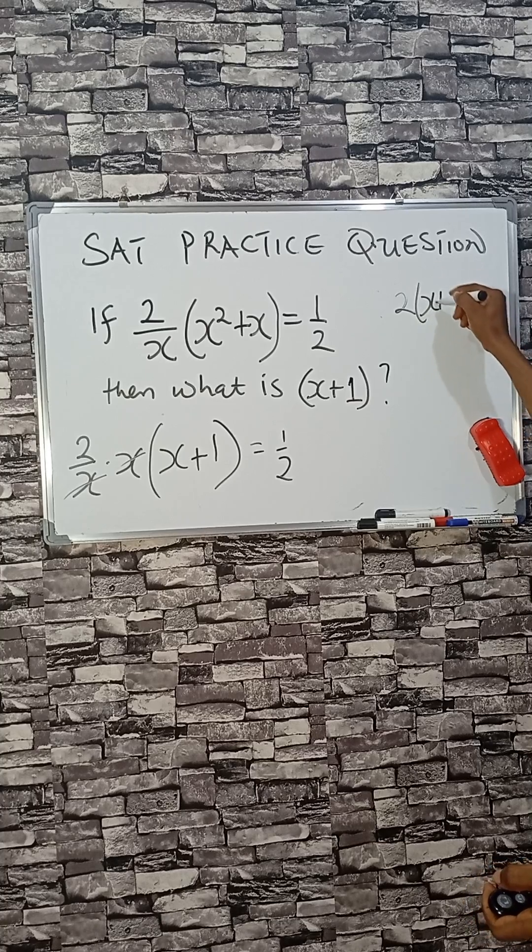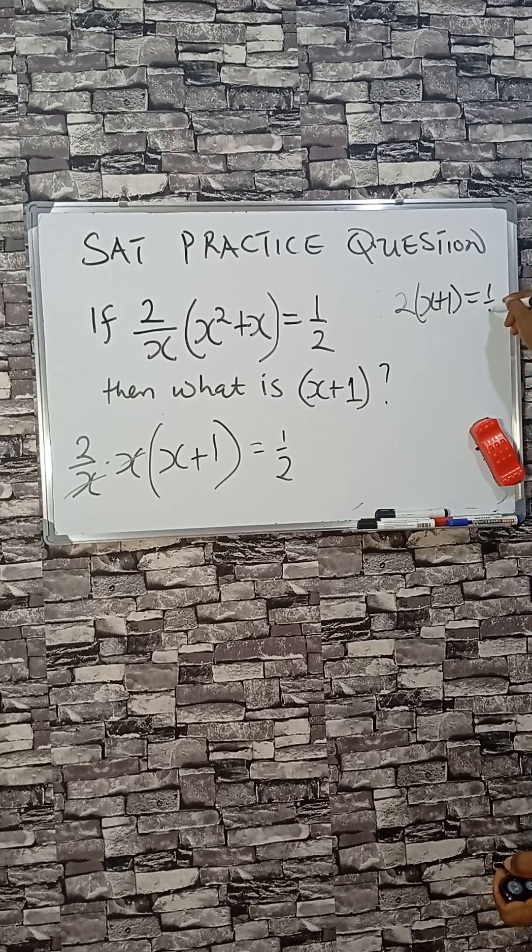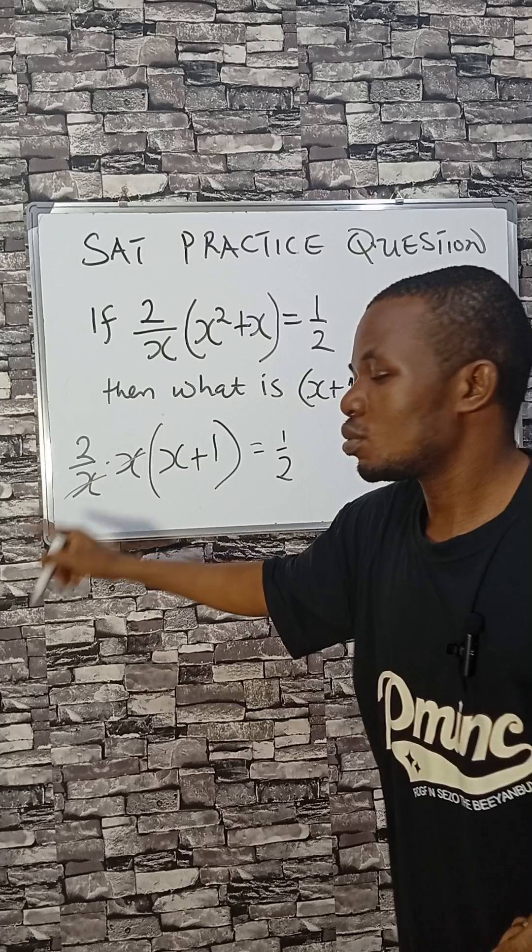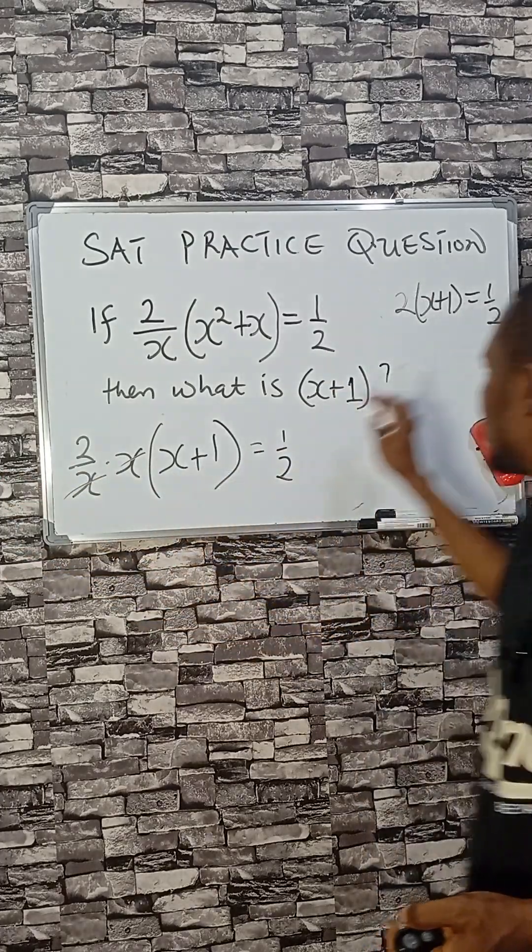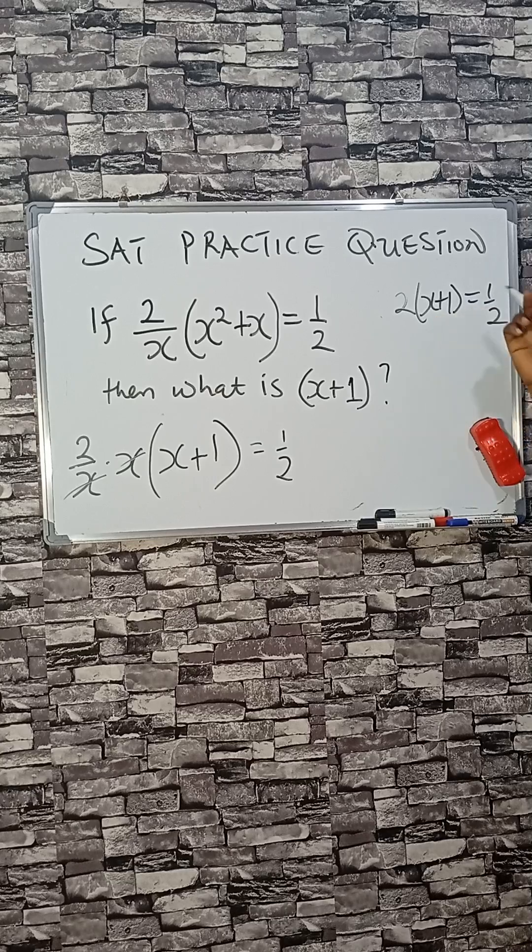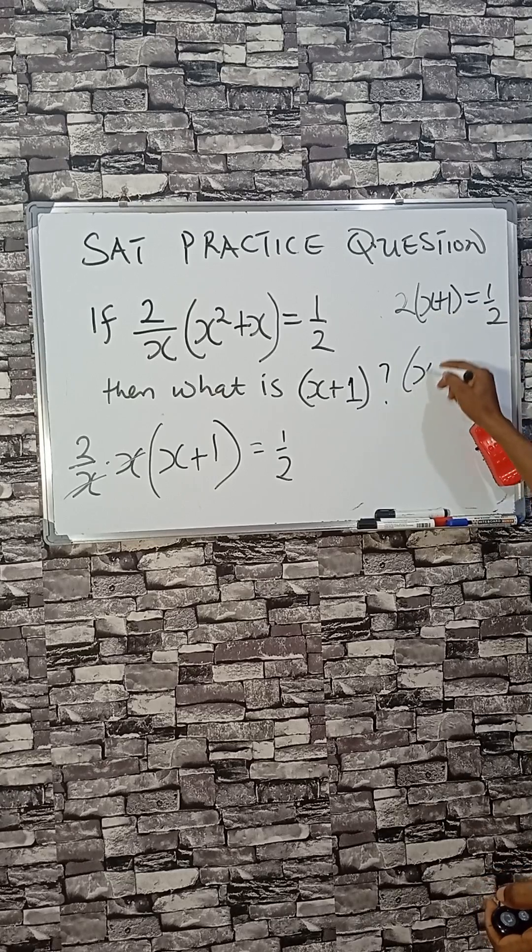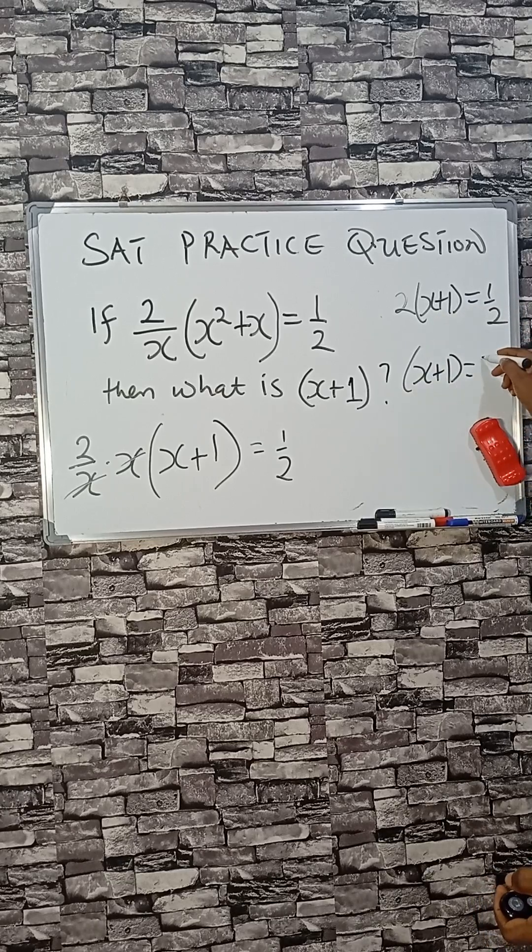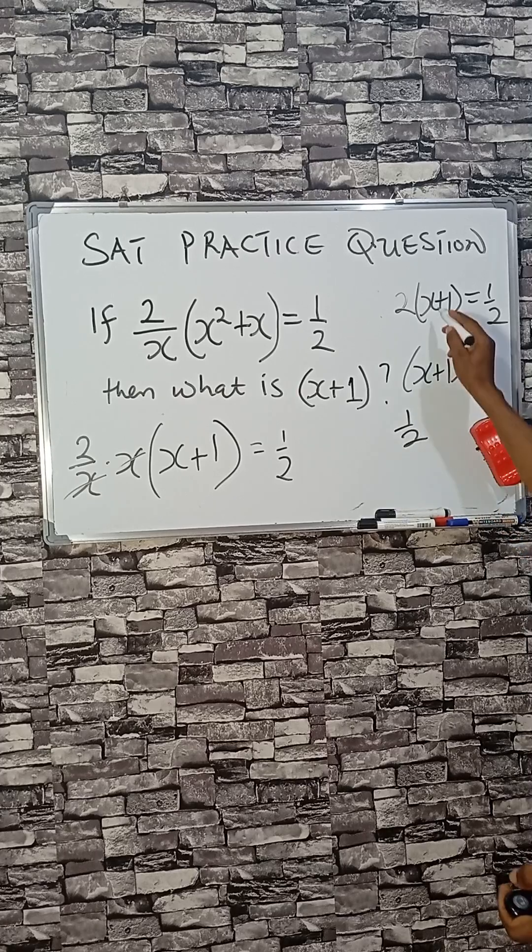Into x plus one equals to a half. So two times the bracket, that's why we have this. Now let me solve for x plus one. So you see, the bracket x plus one equals to a half divided by two.